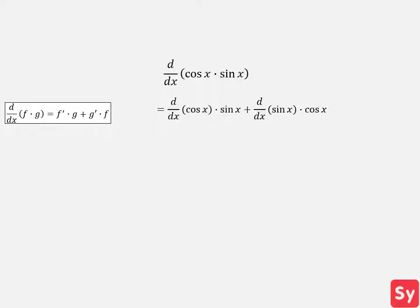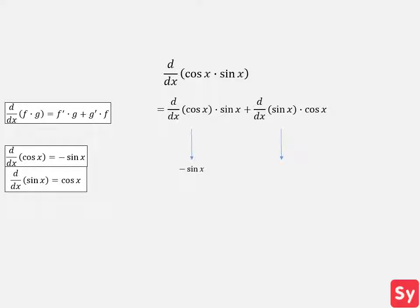Next, we will compute the derivative of cosine of x first. We recall the derivative of cosine of x — this equals negative sine of x. And now we will compute the derivative of sine of x. We recall the derivative of sine of x, and this equals cosine of x. So we can plug these derivatives back into the solution. We now simplify and get cosine squared of x minus sine squared of x as our answer.